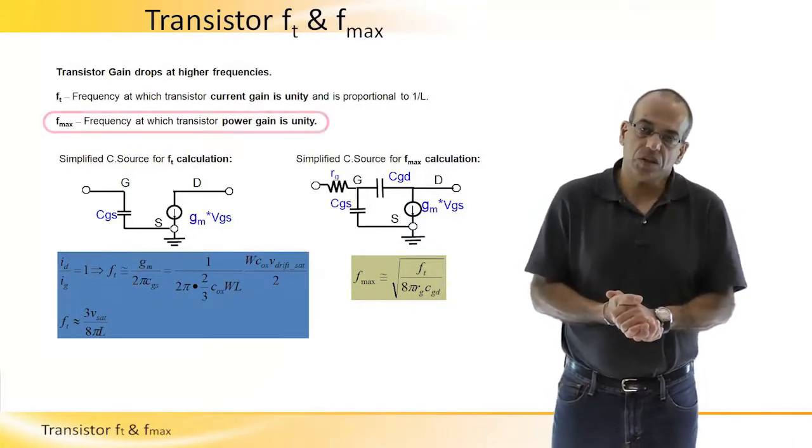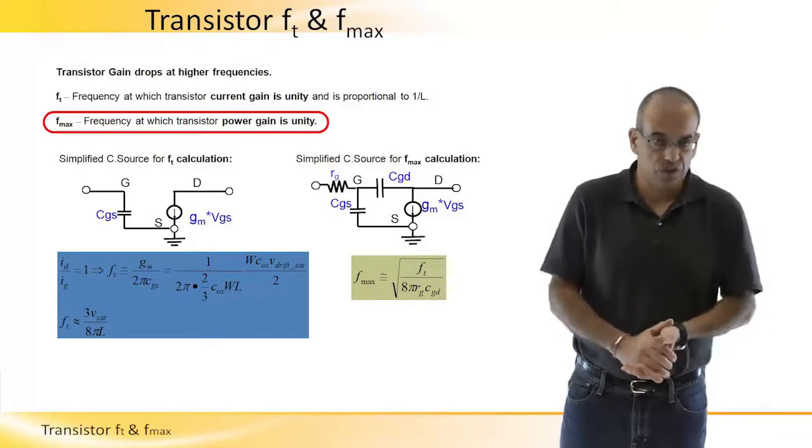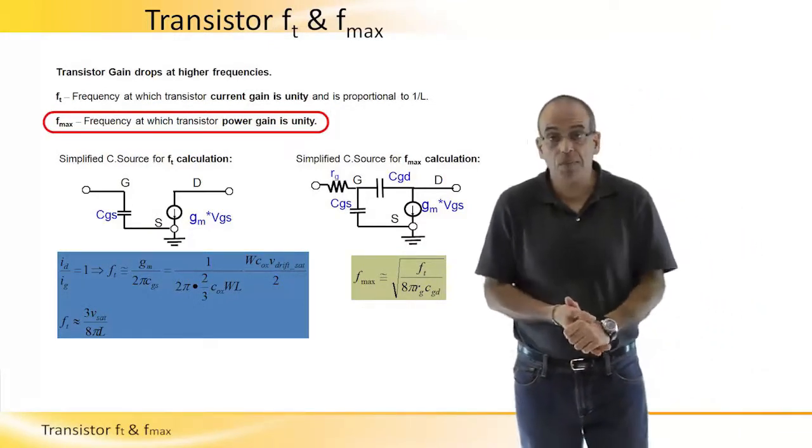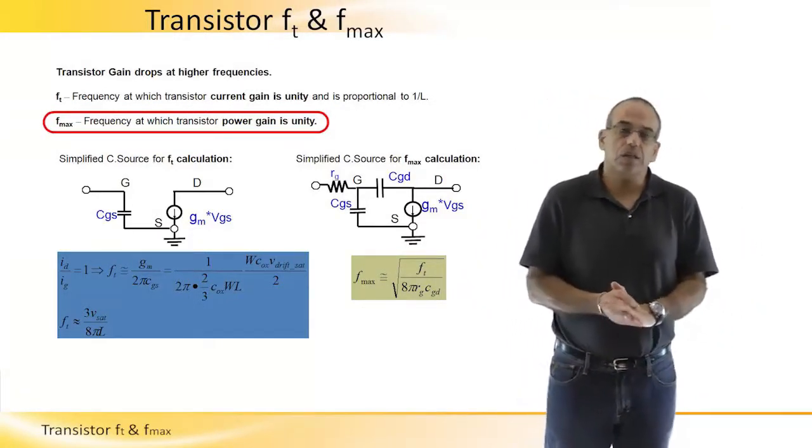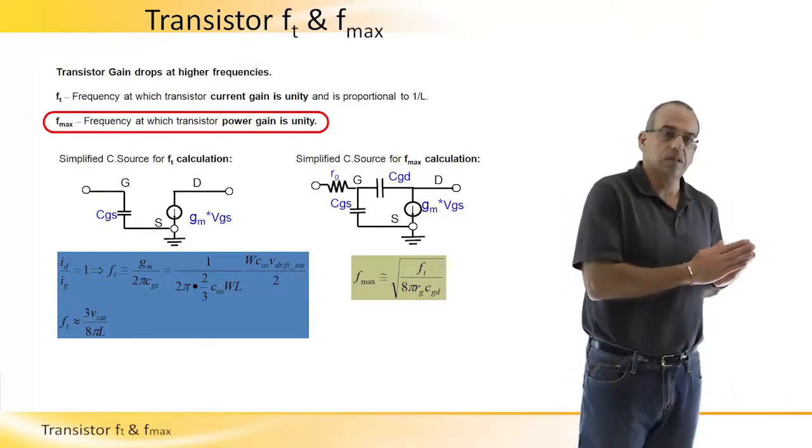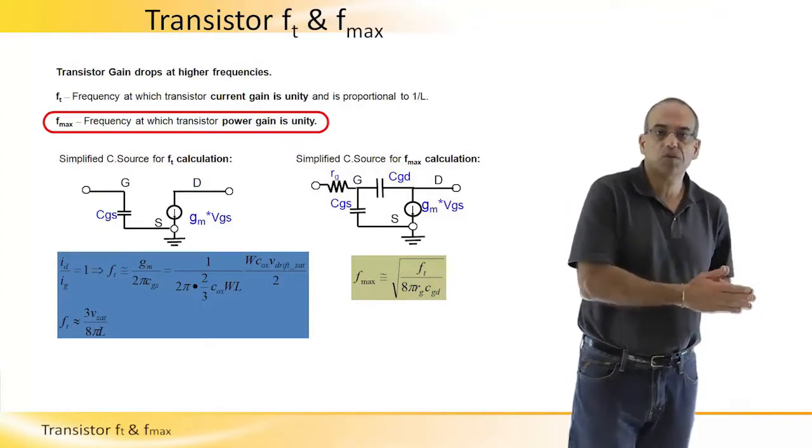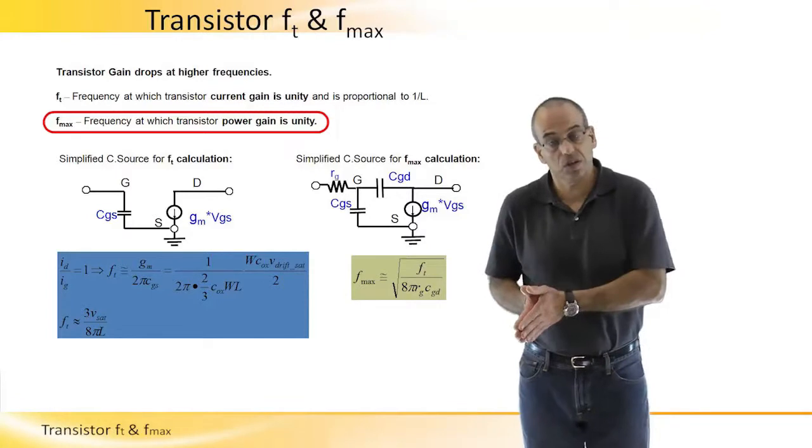Fmax is another important frequency in RF CMOS design. It doesn't talk about gain of current but rather gain of power or power gain.